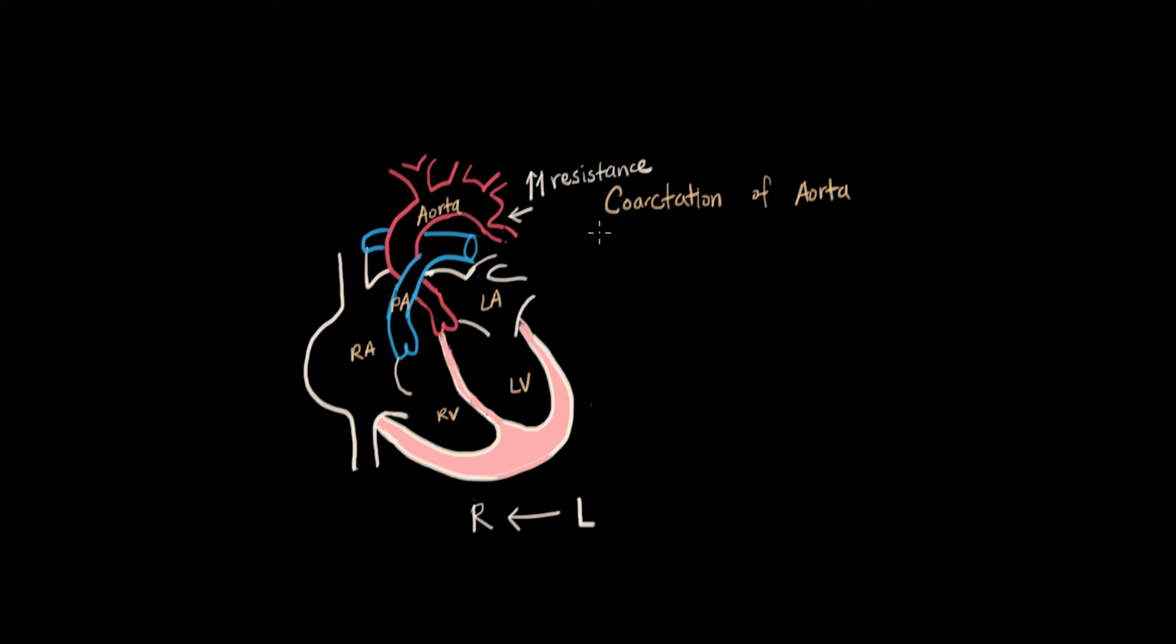And coarctation can be its own isolated defect, but sometimes it also involves a VSD. Ventricular septal defect. That just means a hole between the two ventricles. So here we have our VSD. So if we have both, just to drive home the idea of the shunt, the blood going into the aorta has a lot of resistance here, and it's going to back up right into the VSD. So the shunting goes this way.